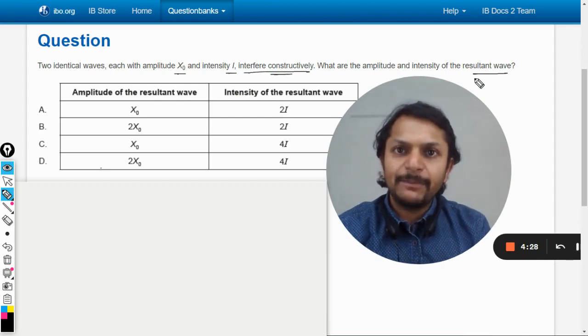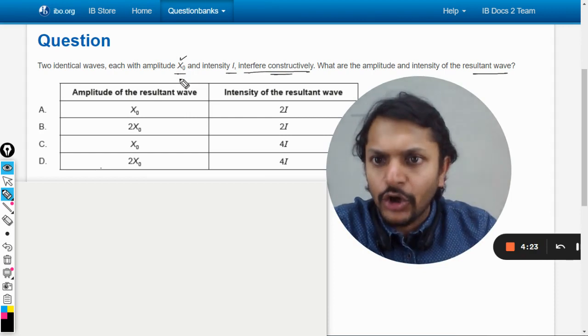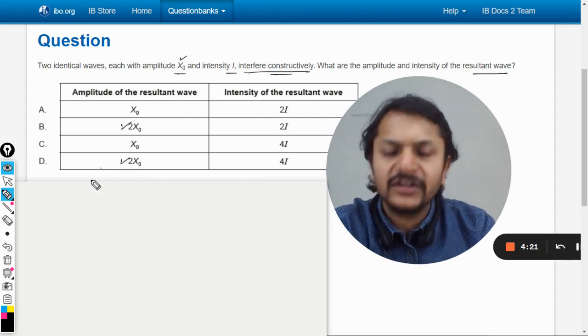So, two waves, they are having the amplitude A1 and A2. So they will just get added. Now, both of the waves are having amplitude X0. Obviously, the resultant will be double of it. No doubt about it.